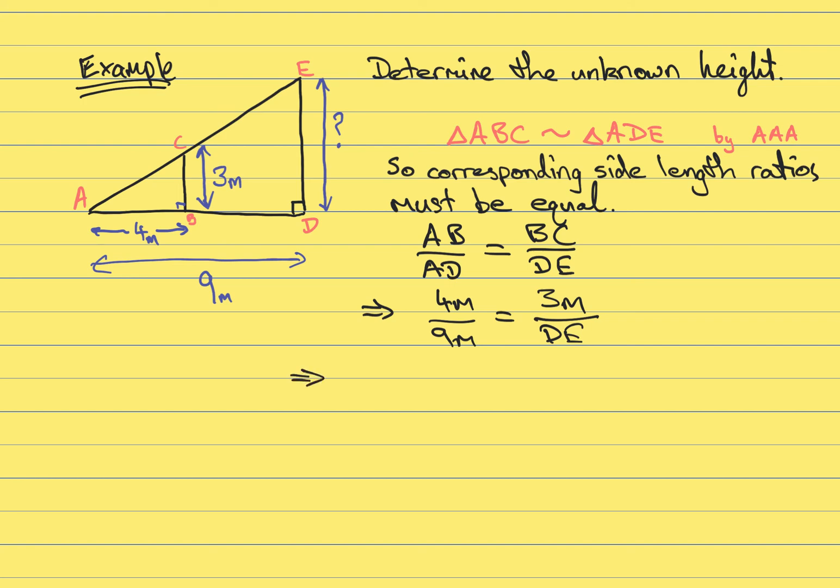Moving to the next step, we can start to rearrange this equation. We could write that DE, the length of the side DE, is equal to 3 multiplied by 9 divided by 4. Which is equal to 27 divided by 4, or 6.75 metres.